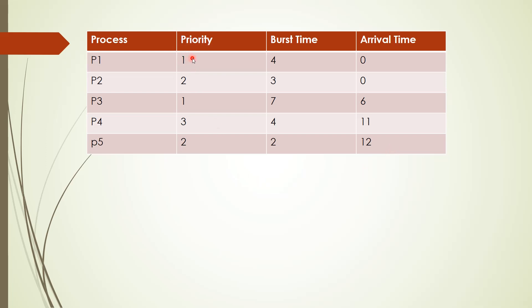Priority of P1 is 1, priority of P2 is 2, priority of P3 is 1, priority of P4 is 3, and priority of P5 is 2. A lower value in the priority means it has the highest priority. Comparing P1 and P2, P1 is having the highest priority, so P1 will be executing first.